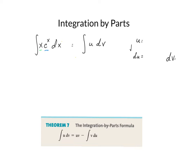So I choose something for u. In this case, I'm going to choose u to be x. And I choose something for dv, and I'm going to choose that to be e to the x dx.